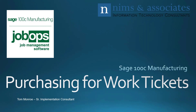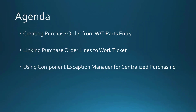Thank you very much for joining us today. Today I'd like to talk about purchasing for work tickets. Our agenda is pretty simple: we're going to talk about how to create purchase orders from work tickets parts entry, how to link purchase order lines to work tickets, and I'm going to introduce you to the Component Exception Manager in Sage 100 Manufacturing for centralized purchasing.